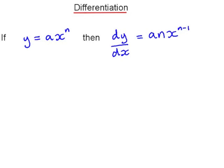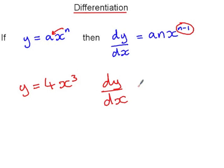You may remember it as multiply by the power and reduce the power by 1. For example, if y equals 4x cubed, then dy by dx is equal to 4 times 3 times x, reduce the power to x squared, so 12x squared.